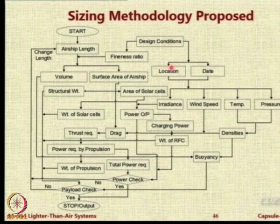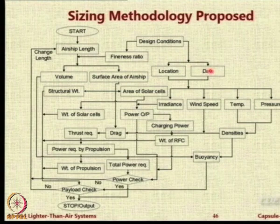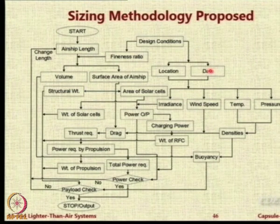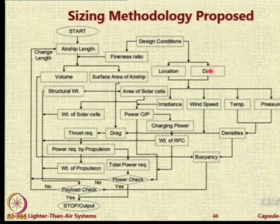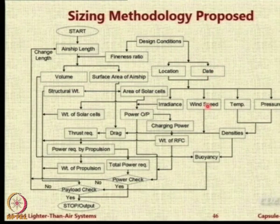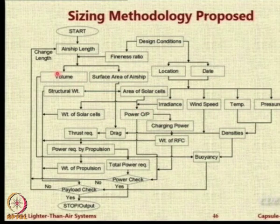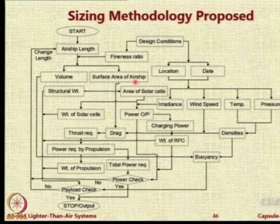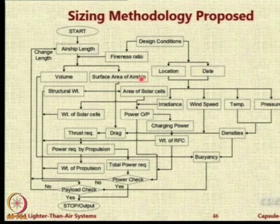At that location and at a particular date — because over time and date the energy will vary — for a given location and date, wind speed, irradiance, temperature, and pressure are available. From those we calculate all system volumes, and the volume will drive the payload. The surface area of the airship leads to drag as well as the system weight.